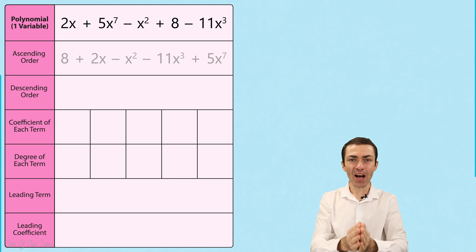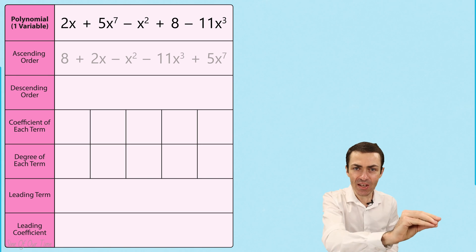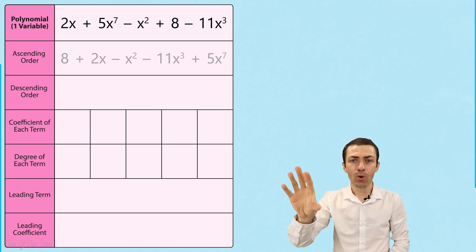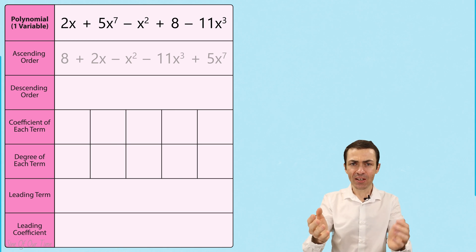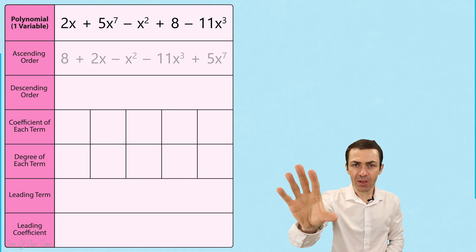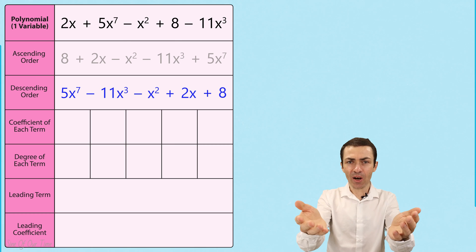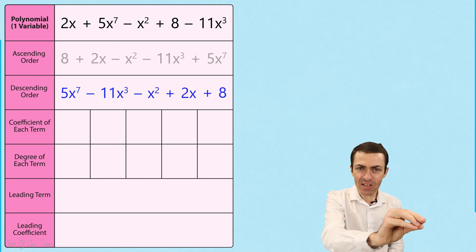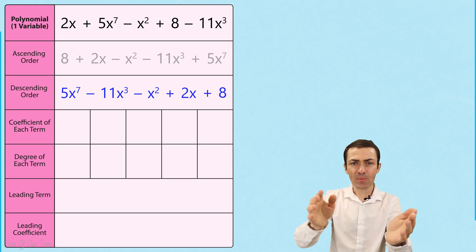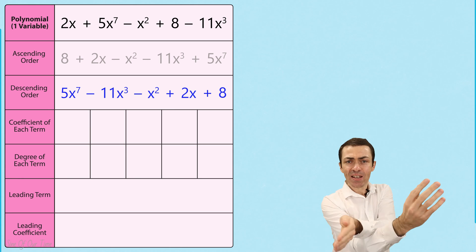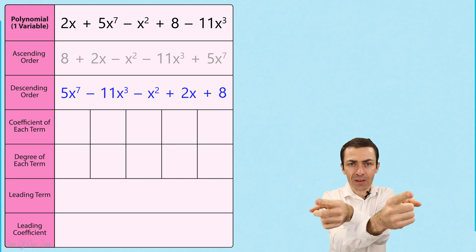It is more common, however, to be asked to write a polynomial in descending order, or descending powers of x. Descending just means from biggest to smallest. So when we take this polynomial and write it in descending order, we notice that the order of the terms is the exact opposite to when they are written in ascending order.